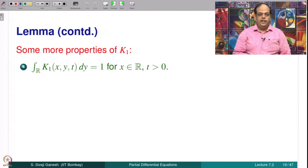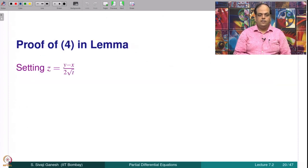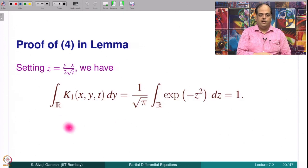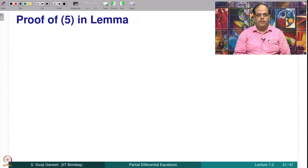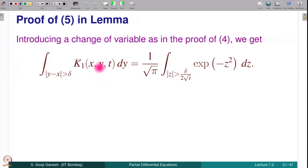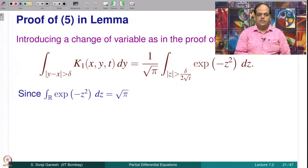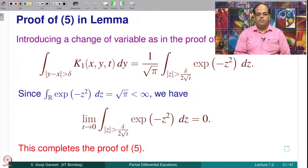Further properties of K₁: the integral of K₁ is 1. For any δ > 0, lim_{t→0+} ∫_{|y−x|>δ} K₁(x,y,t) dy = 0 uniformly for x in ℝ. For the proof of property 4, setting z = (y−x)/(2√t), the integral of K₁ equals a standard Gaussian integral equal to 1. For the proof of property 5, using the same change of variable, because the full Gaussian integral equals √π and is finite, as t → 0 the integral over the tail region goes to 0. This completes the proof of property 5.